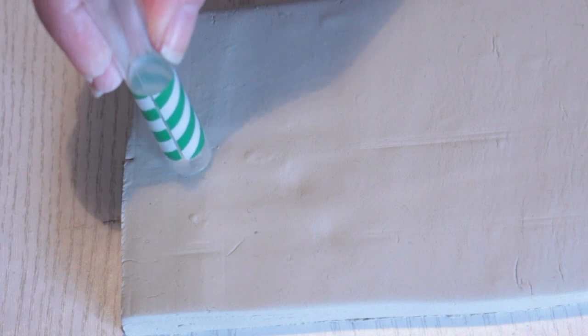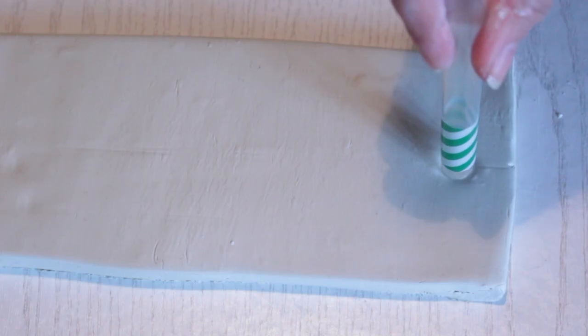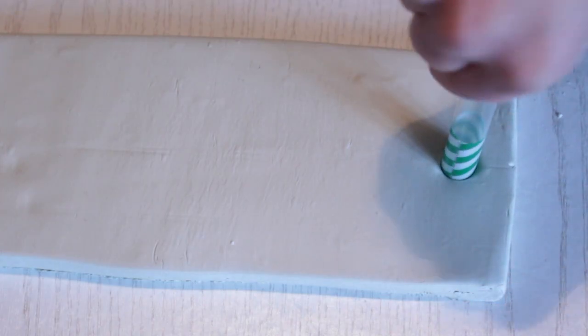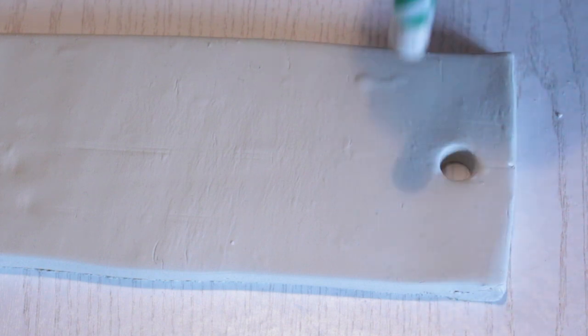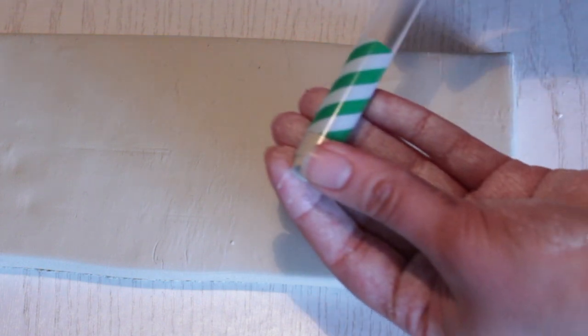Then take a straw and then place it right on top of the marking and press down. Spin the straw around a few times to carve out the hole, pull it out and then remove the excess clay.